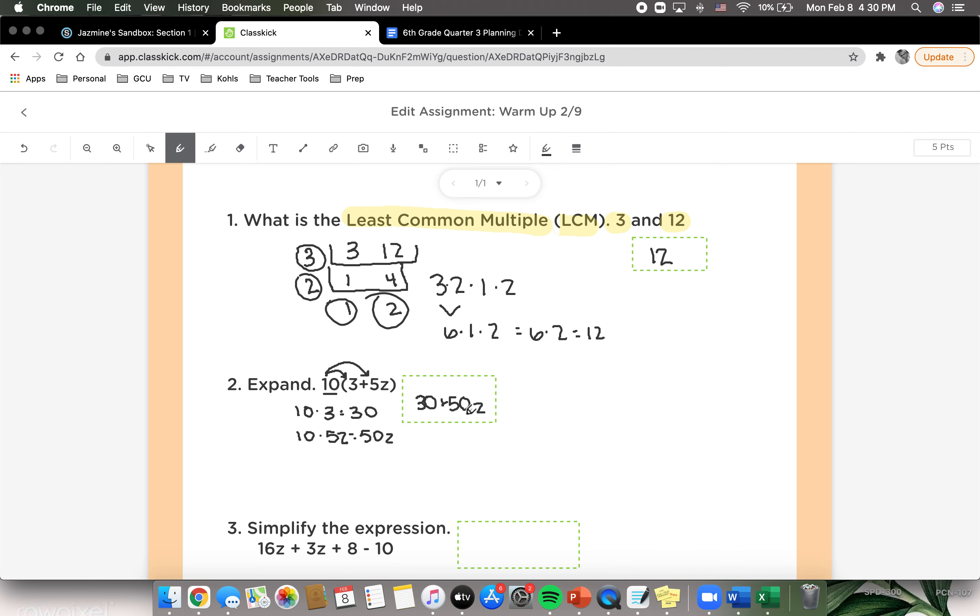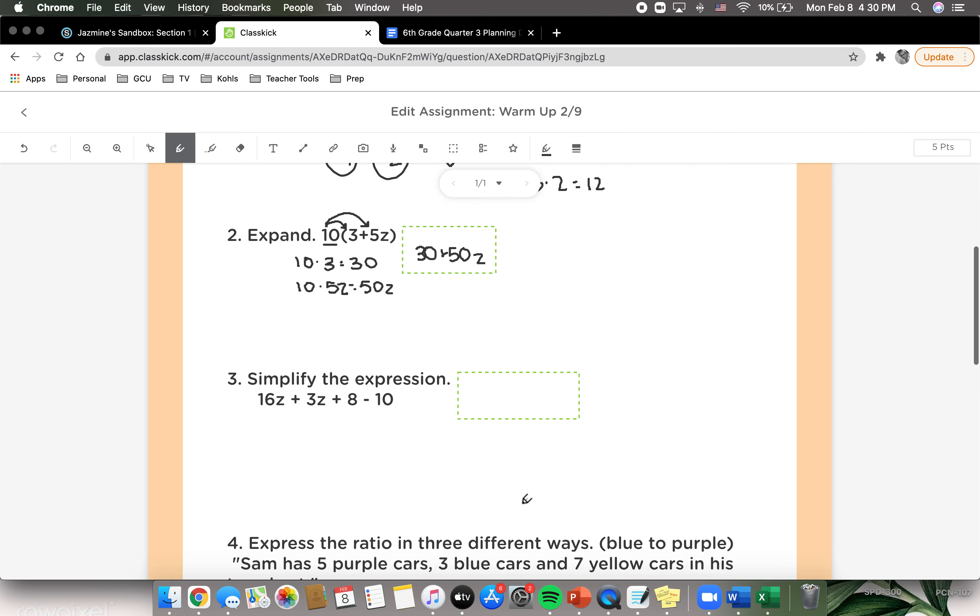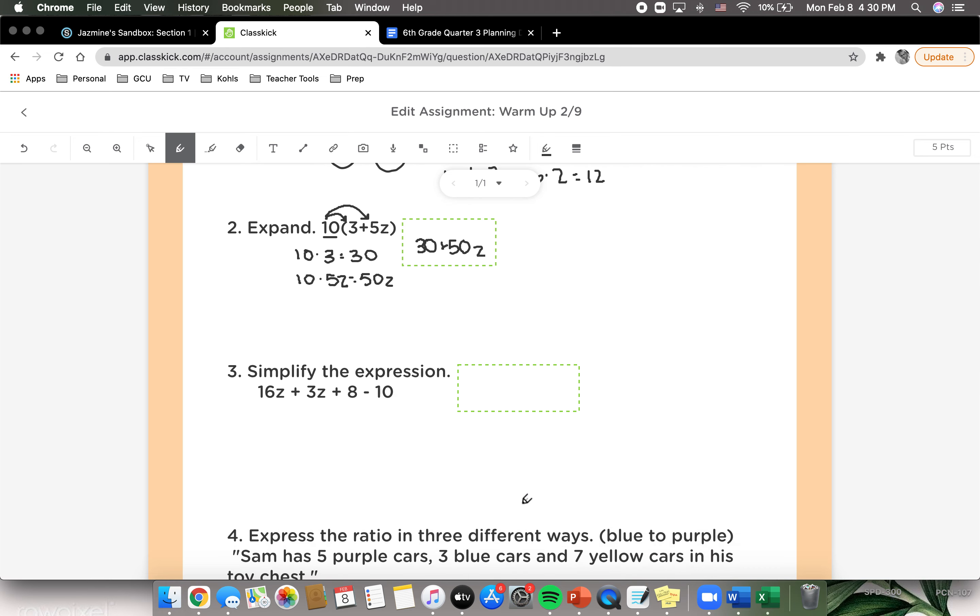Looking at number 3, it says simplify the expression 16z plus 3z plus 8 minus 10. So we're going to highlight all the like terms. So I know that 16z is a like term to 3z, and 8 and negative 10 are like terms.